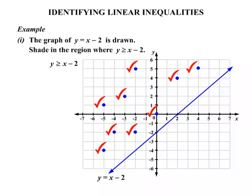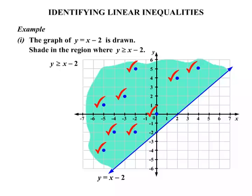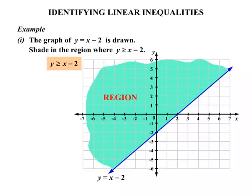So the region there that's shaded, that's our required region. All of those points above the line would be in the region. Now we had the y is greater than or equal to x minus 2. So that is our region there.